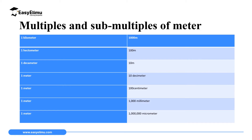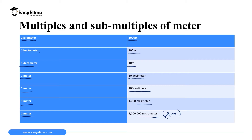Here are some multiples and submultiples of a meter: one kilometer equals 1000 meters; one hectometer equals 100 meters; one decameter equals 10 meters; one meter equals 10 decimeters; one meter equals 100 centimeters; one meter equals 1000 millimeters; and one meter equals 1 million micrometers, where micrometer is written with the symbol μm.